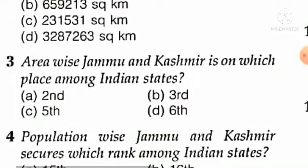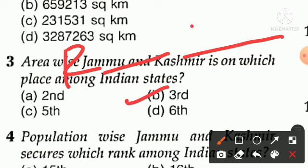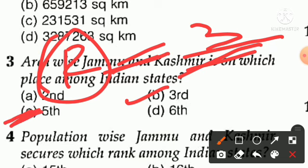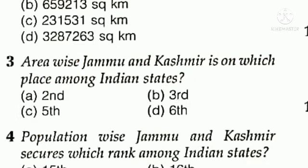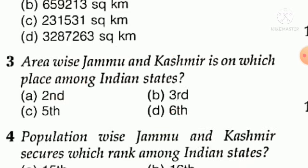Question number three: area-wise, Jammu and Kashmir is on which place among Indian states? Rajasthan is number one. J&K as a state was ranked fifth area-wise — not third, not sixth, not second. Fifth. If asked about the ranks of UT of J&K and UT of Ladakh area-wise, please share those answers in the comments.